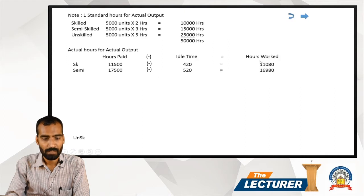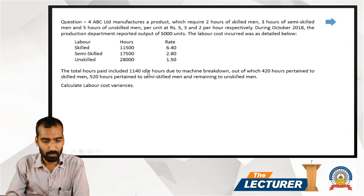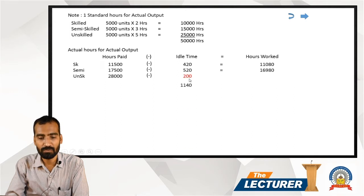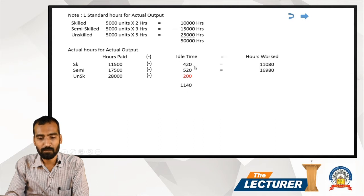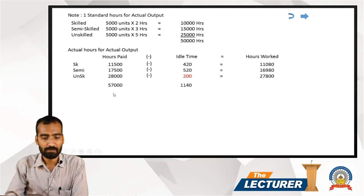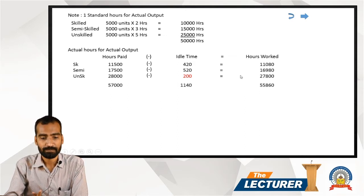Unskilled: total idle hours are 1,140. Subtracting skilled idle (420) and semi-skilled idle (520) gives remaining unskilled idle hours = 200. Therefore unskilled hours worked = 28,000 − 200 = 27,800 hours. Total hours paid = 57,000; total idle time = 1,140; total hours worked = 55,860.